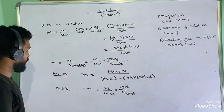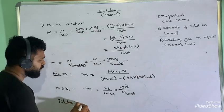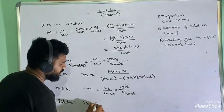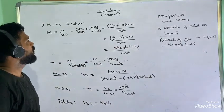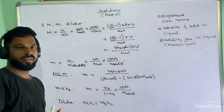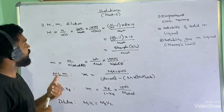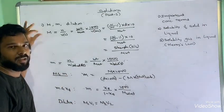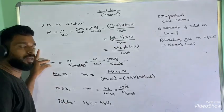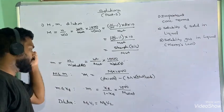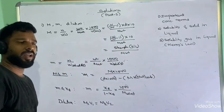During dilution, concentration decreases and we use M₁V₁ = M₂V₂. These concentration terms are required for solving solution problems — specifically, molarity is needed for finding osmotic pressure, and molality is needed for finding elevation in boiling point and depression in freezing point.